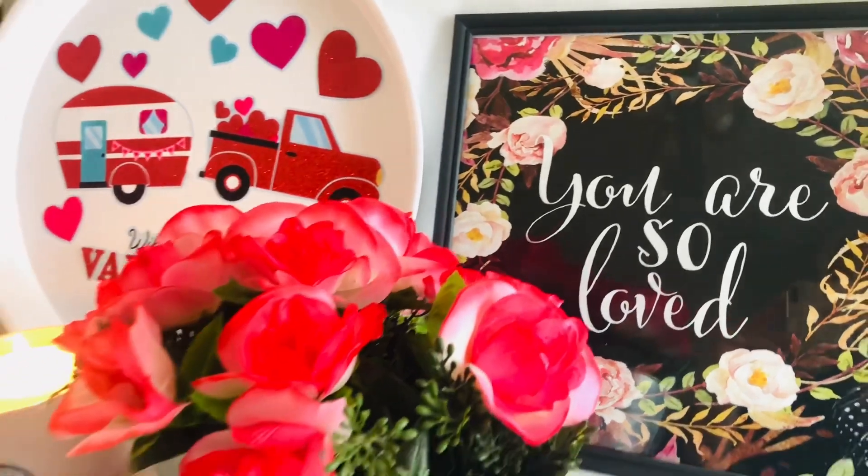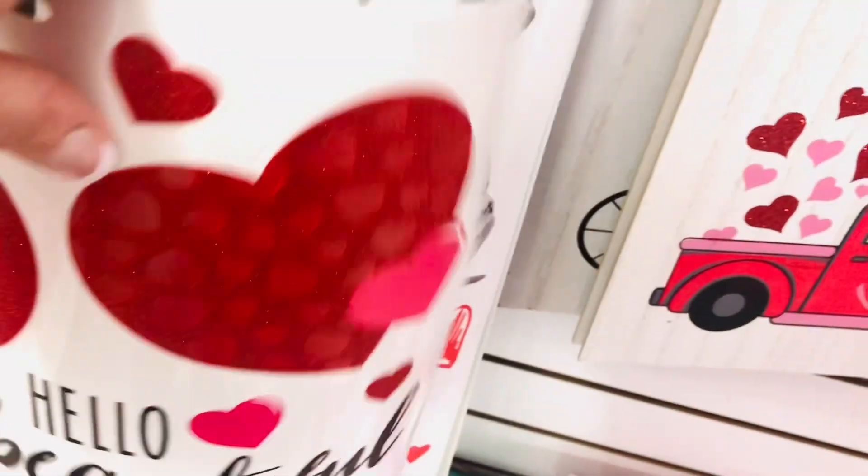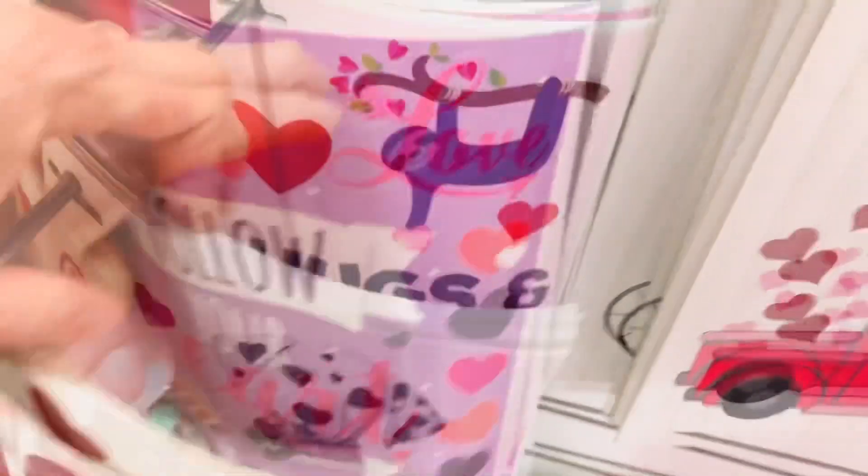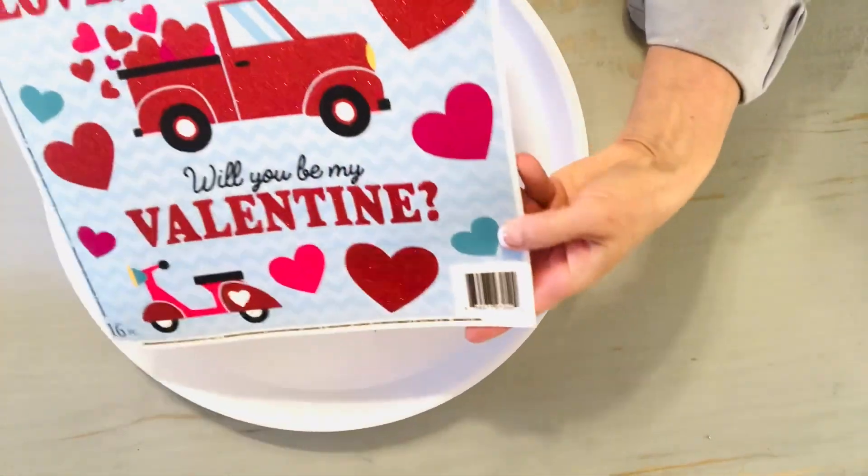We're going to start with a super simple DIY decor idea that you can make with just two items. The first is a white tray. I purchased this at Walmart for $5. And the second is a sheet of decals from Dollar Tree.